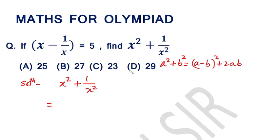Here is a square and here is x square. Here is b square and here is 1 over x square. This means in place of a, we can put x.